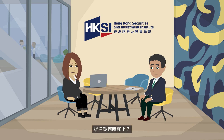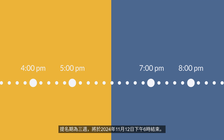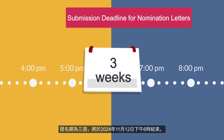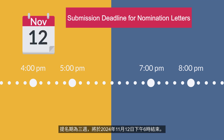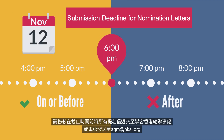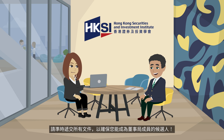When is the nomination deadline? The nomination period lasts for three weeks and will end on November 12, 2024, at 6 p.m. You must ensure that all the nomination letters are submitted to the HKSI Institute Hong Kong office or to AGM at hksi.org before the deadline. Make sure to get those letters in on time to secure your spot as a candidate in the board director election.